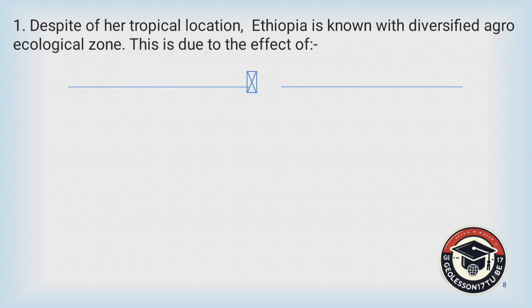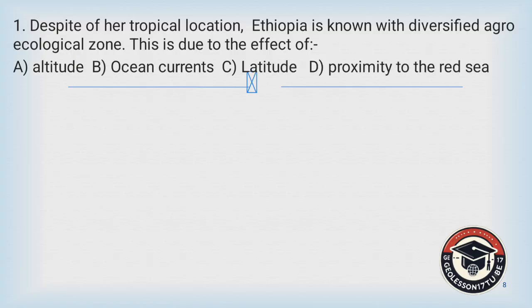Question number one: Despite her tropical location, Ethiopia is known for its diversified ecological zones. This is due to the effect of: A) altitude, B) ocean currents, C) latitude, D) proximity to the sea.